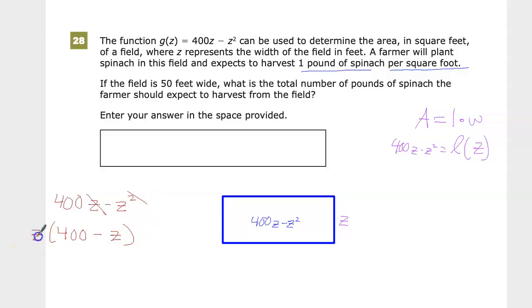That value right there is the length. So I could rewrite this up here as 400 minus z times z